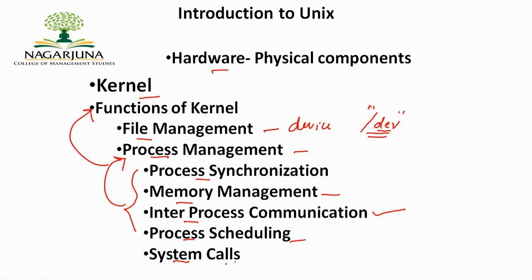The next part is system calls, which are a set of functions that can access the kernel. System calls include services to create a file, begin execution of a program, or open a logical network connection to another computer.